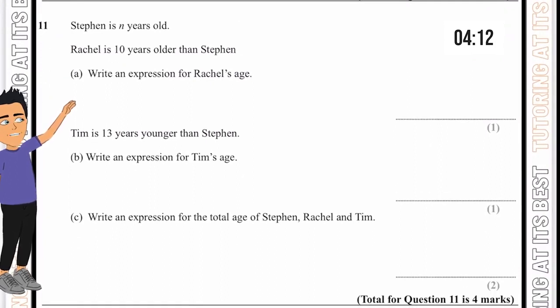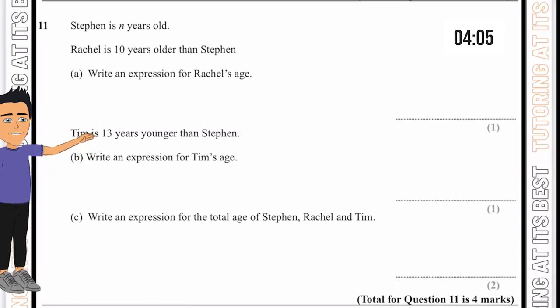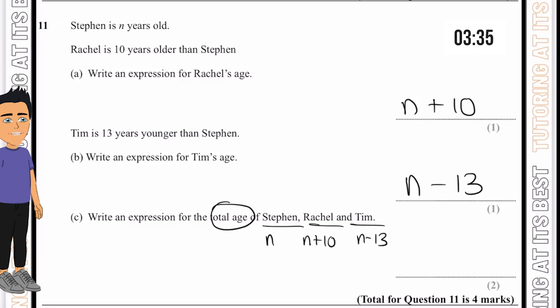Question 11. Steve is n years old. Rachel is 10 years older than Steve. Write an expression for Rachel's age. That's n plus 10. Tim is 13 years younger than Steve. So n minus 13 represents Tim's age. Finally, the total age of Steve, Rachel and Tim. Steve was n, Rachel was n plus 10, and Tim was n minus 13. We have one, two and three n. And 10 take away 13 is minus three. That gives us 3n minus 3.